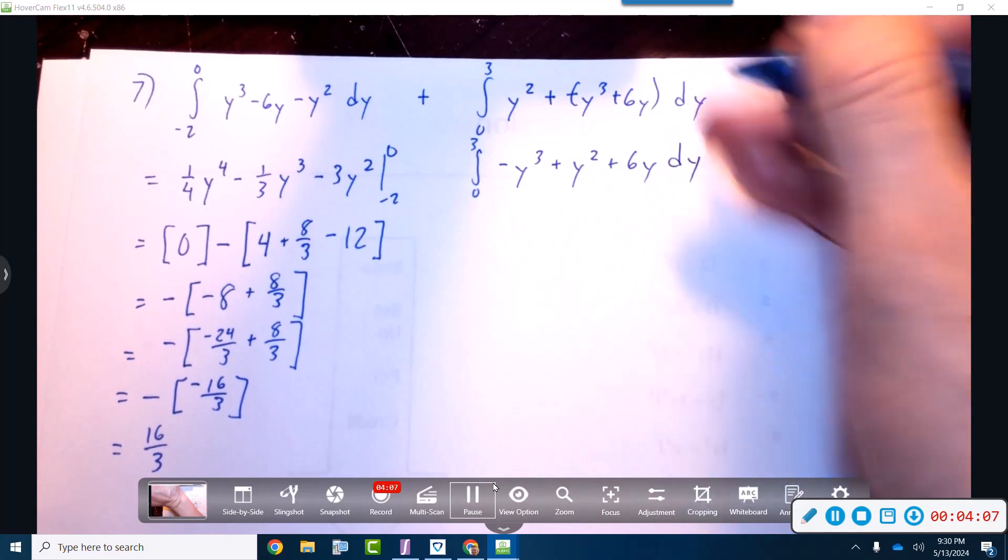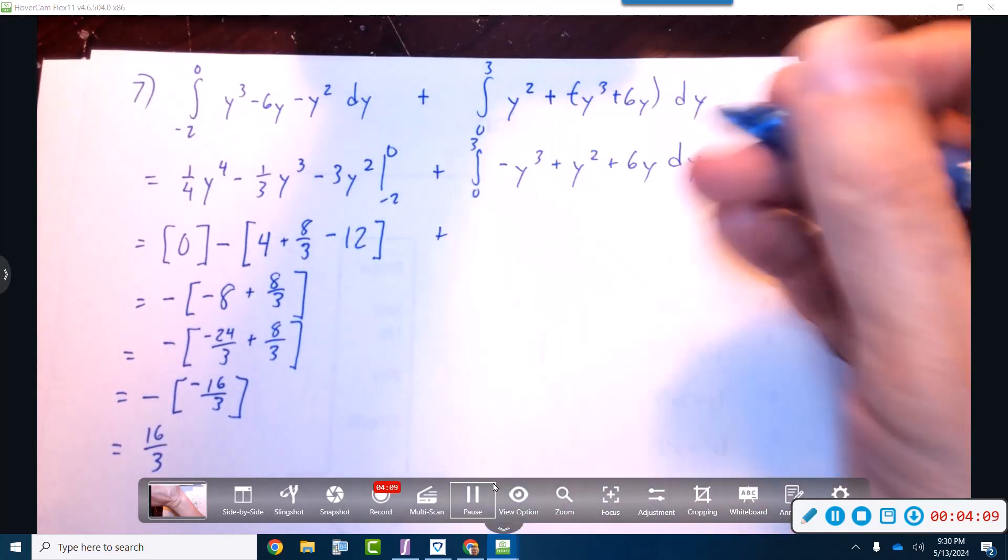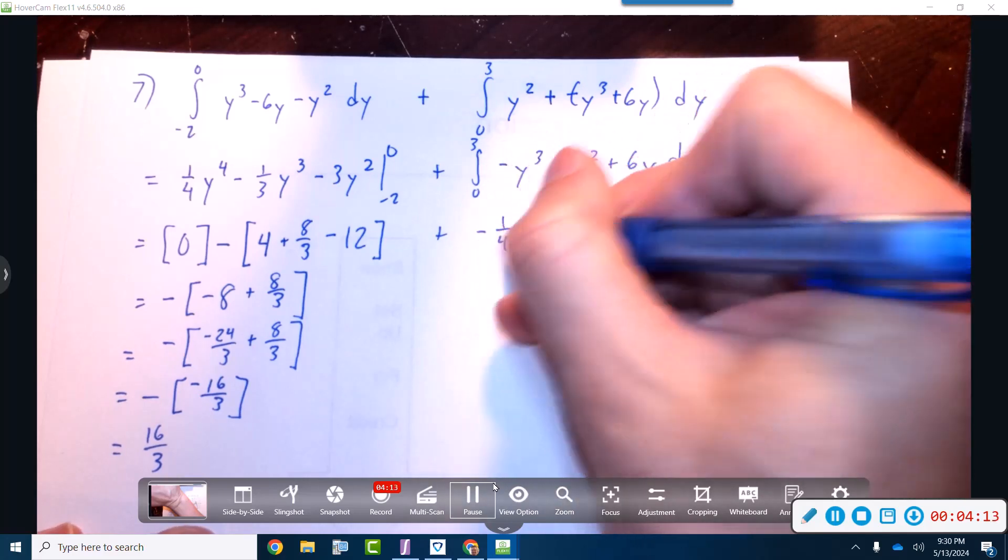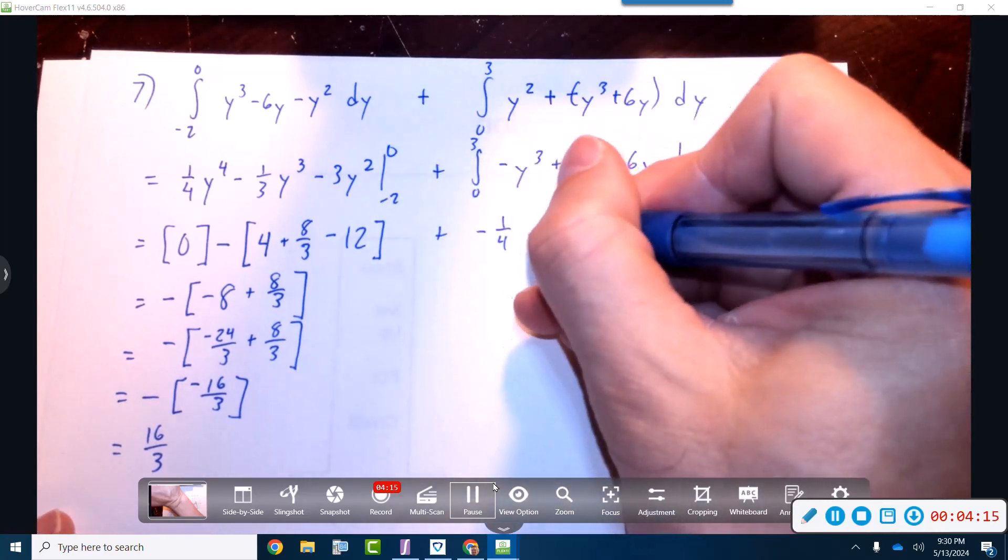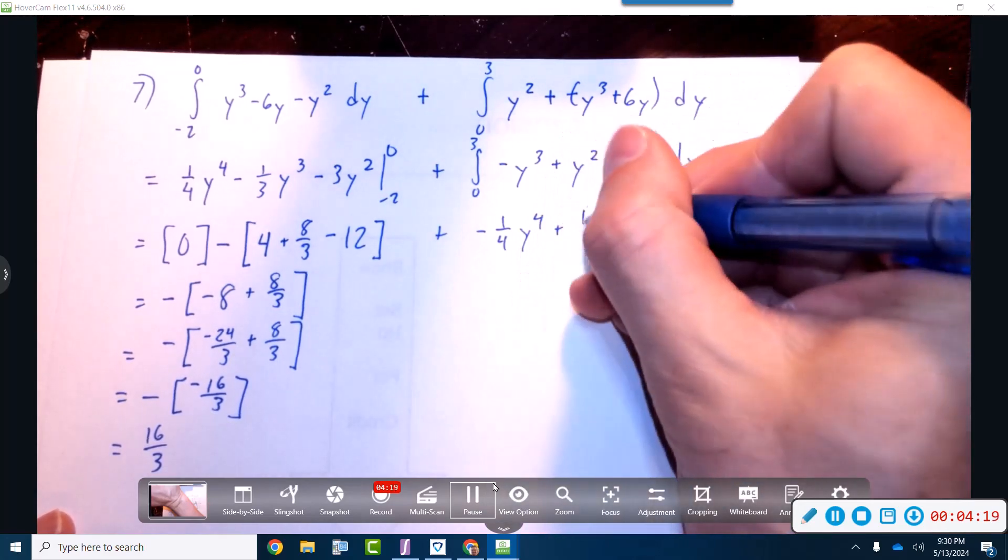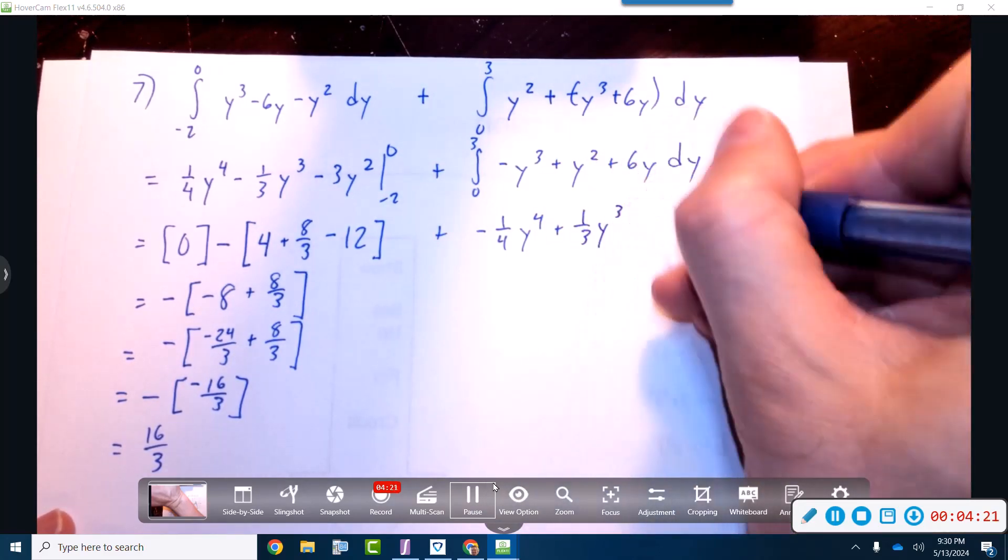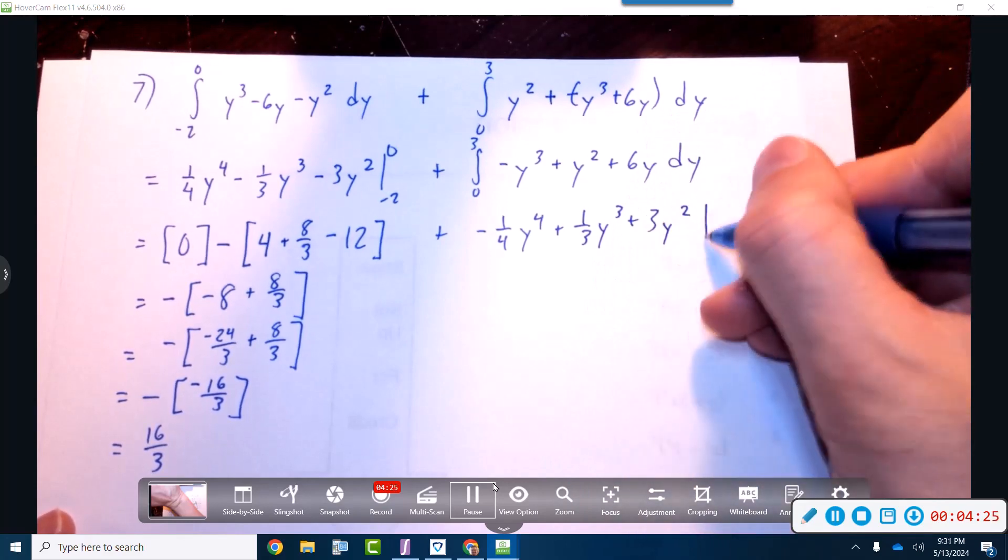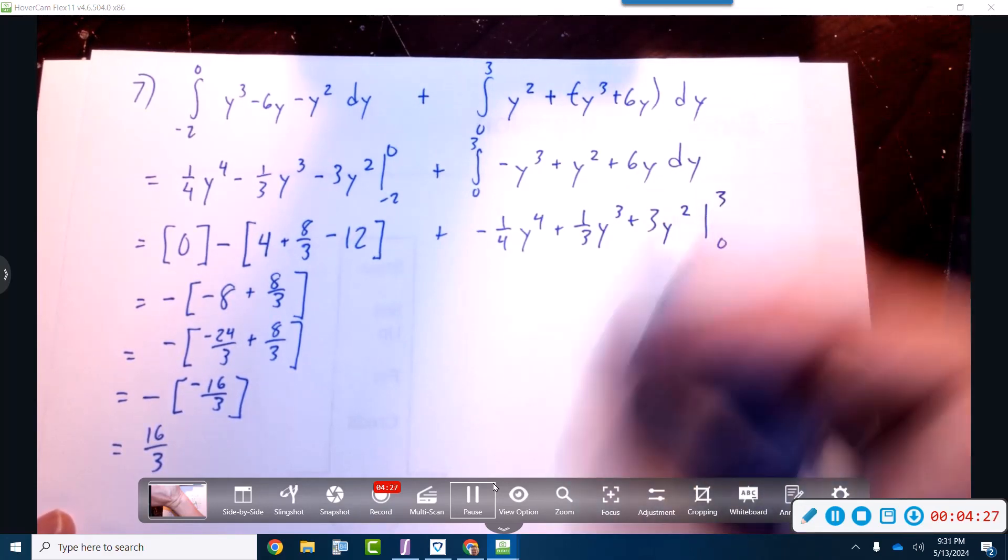Remember, we're adding these. I'm going to go ahead and take the anti-derivative. Negative one fourth over four. Is it the same? I mean, it's basically the same except we just have the negatives. And then plus three y squared. We're going to evaluate those at three and zero, but we don't need to do zero.